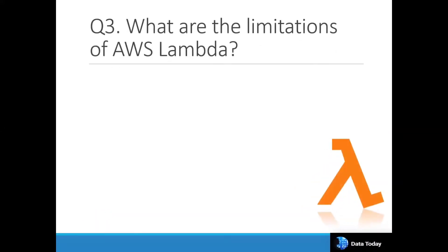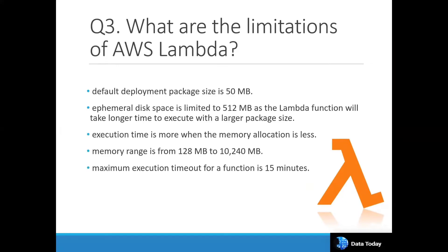This is a very important question that many interviewers ask multiple times: what is the limitation of AWS Lambda? The deployment package is limited to 50 MB. If you want more than that, you need to save it in an S3 location. The ephemeral disk space is limited to 512 MB, as the Lambda function will take longer if you execute a large package size. The execution time is 15 minutes — after that, Lambda will time out.